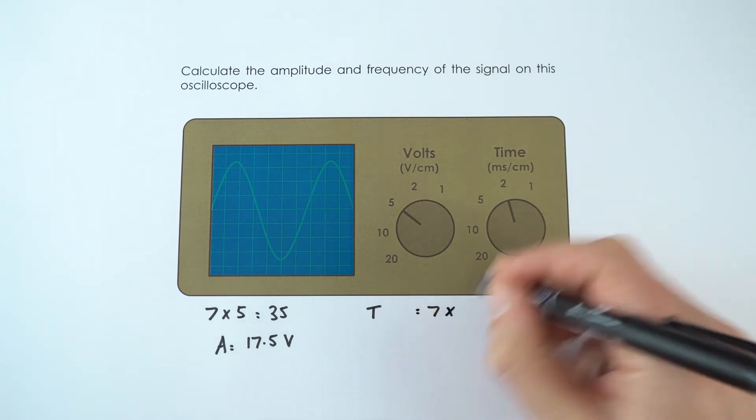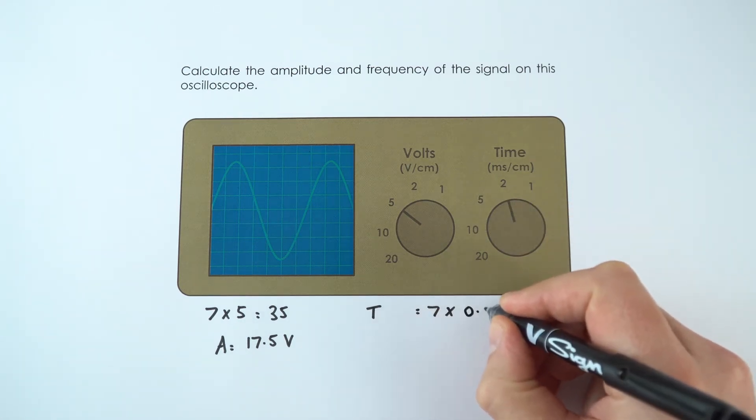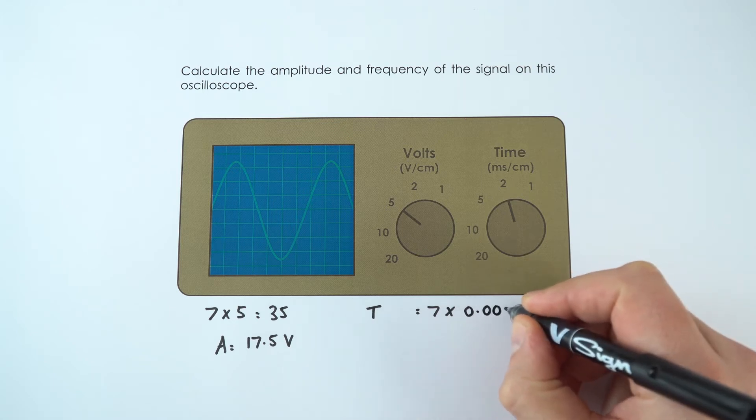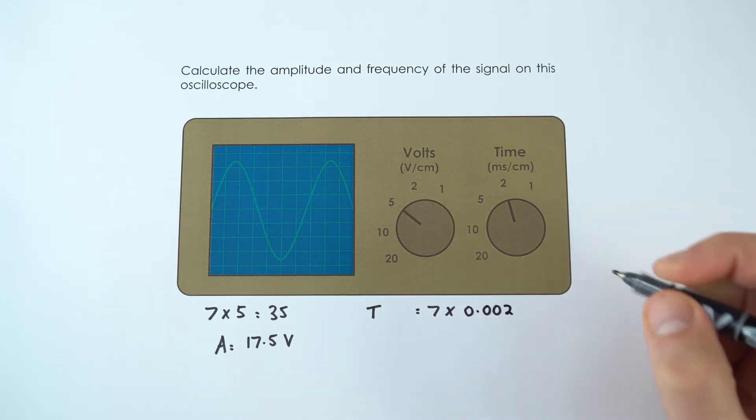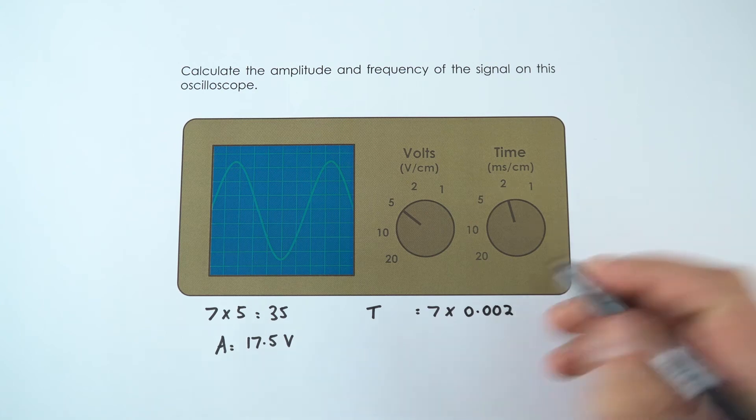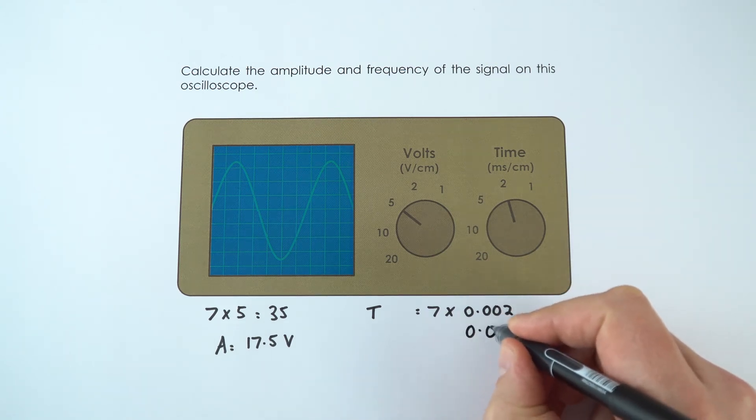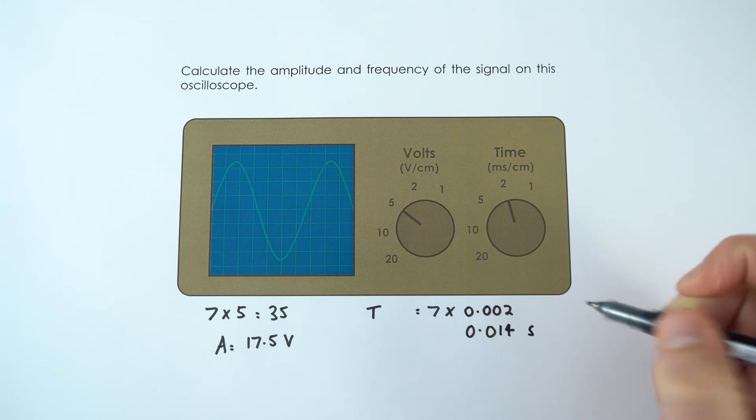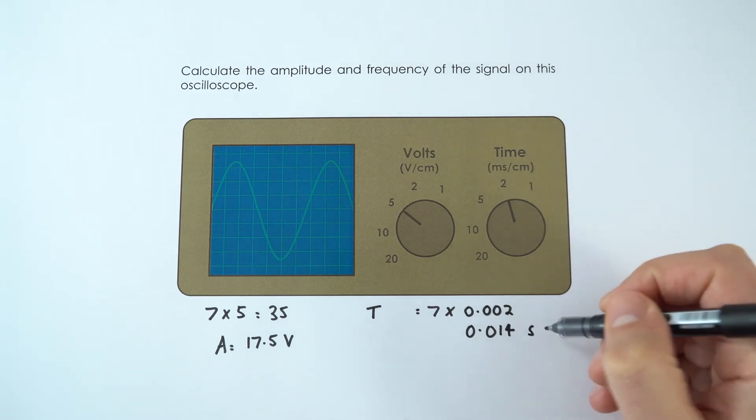Each one is equal to two milliseconds, so that's 0.002 of a second. Seven times 0.002 is equal to 0.014 seconds. So I've converted from milliseconds into seconds.